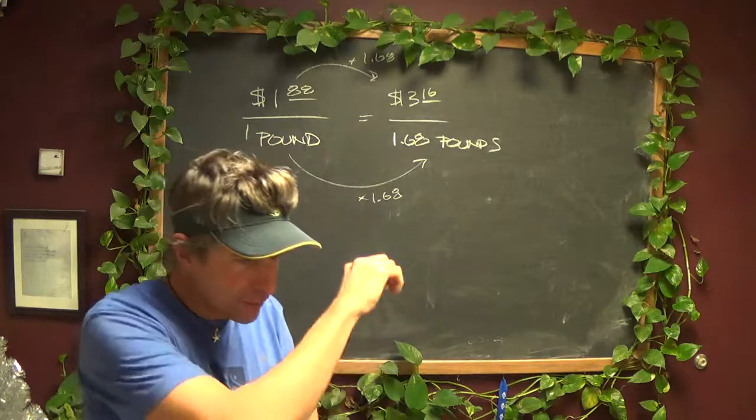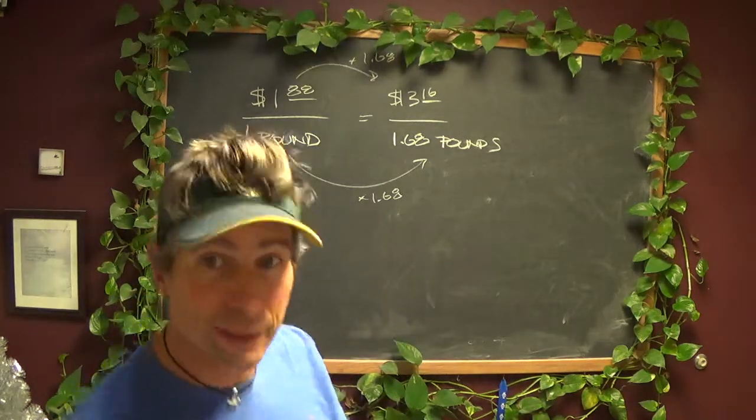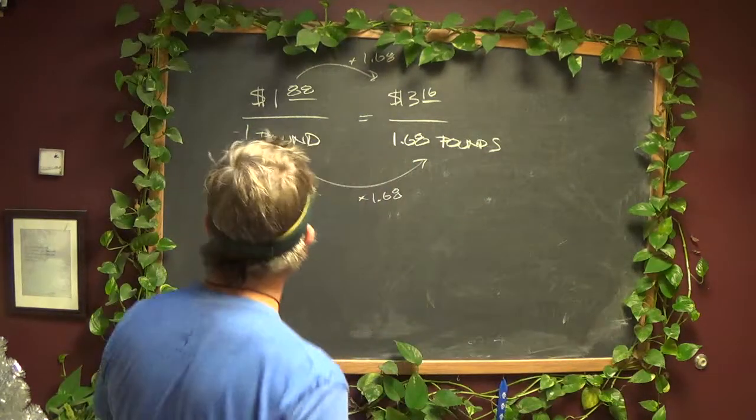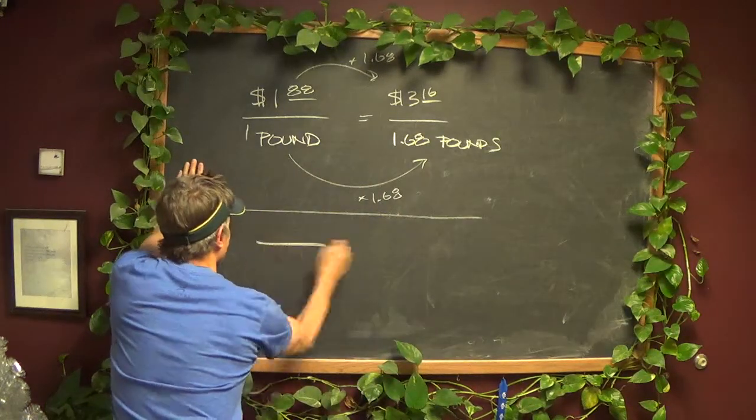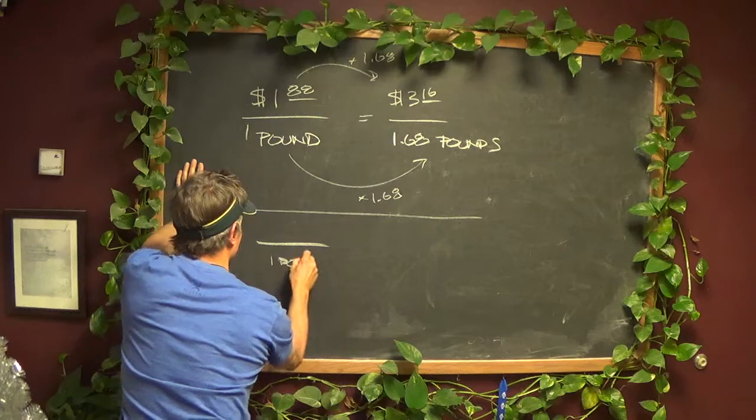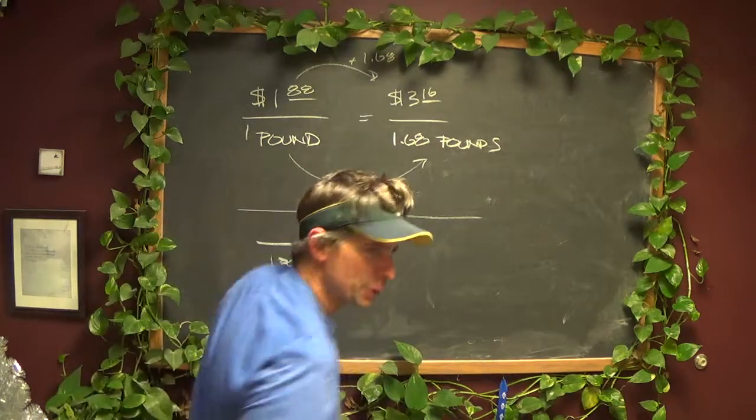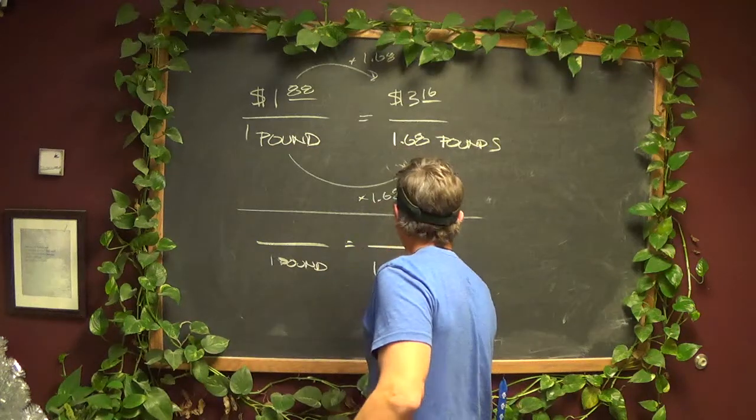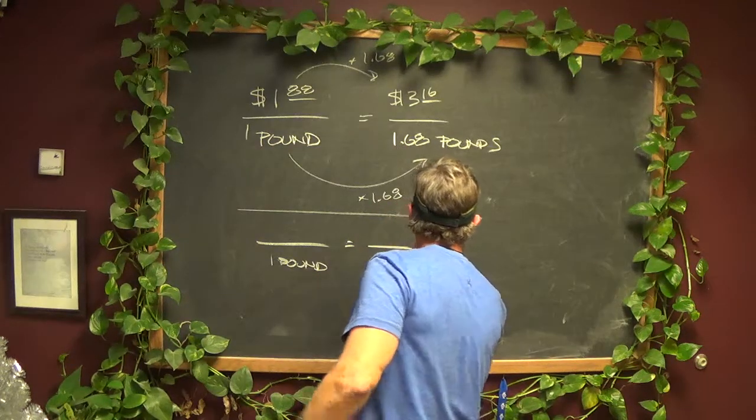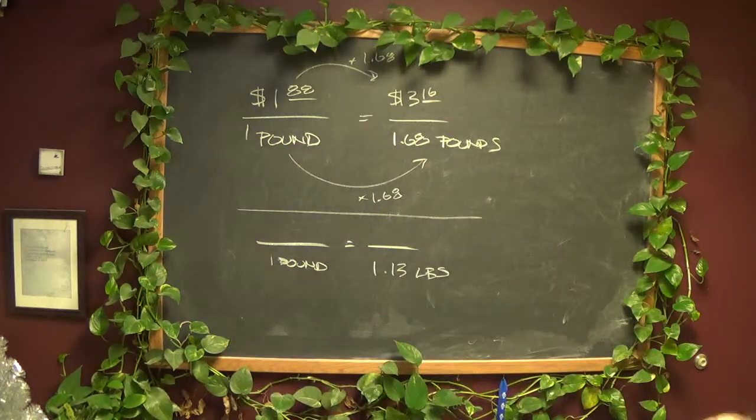Same thing with the rockfish, I want you to find a unit price of the rockfish. So I didn't tell you how much it was per 1 pound, but I did tell you that this much of it, which is 1.13 pounds, costs $9.02.